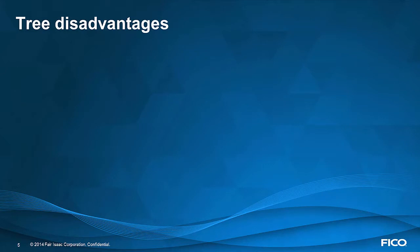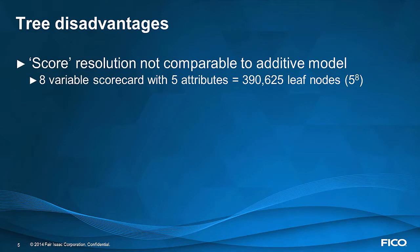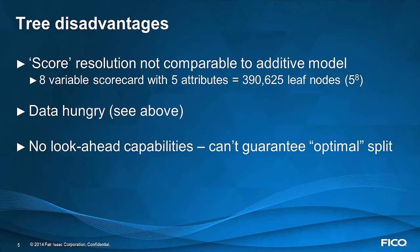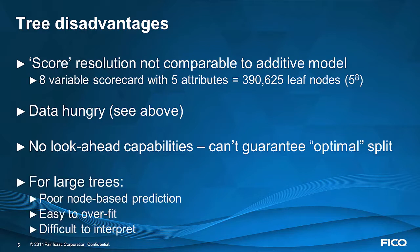Some disadvantages of using trees: the resolution is not nearly comparable to a scorecard, they're very data hungry, there's really no look-ahead capabilities so you don't know for sure that you've got the optimal split as it relates to scorecard segmentation. Large trees can give you poor node-based prediction — that's a concept called overfitting — and they can also be difficult to interpret.